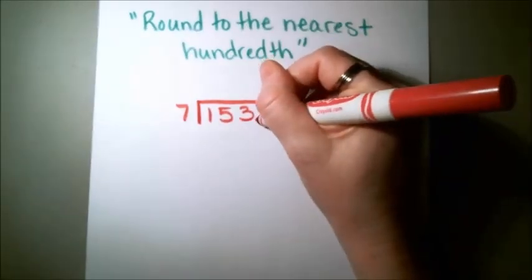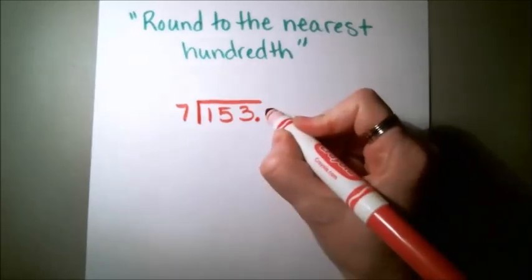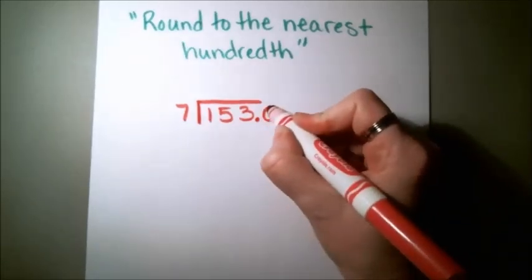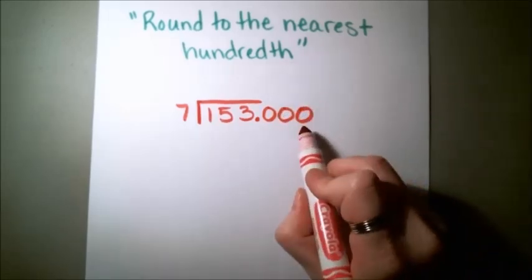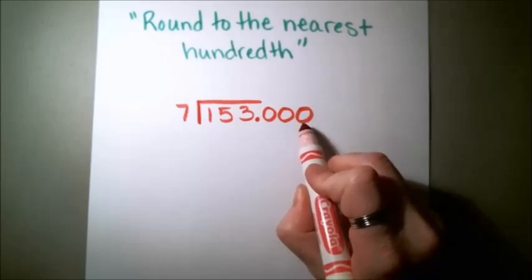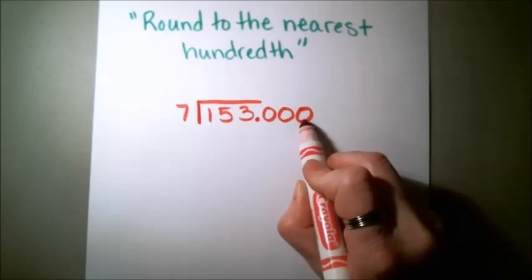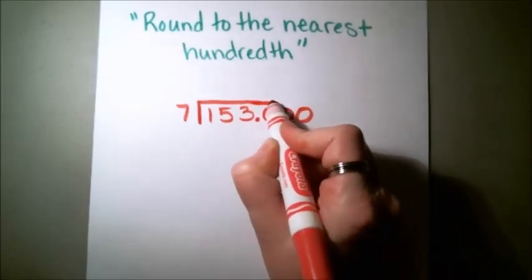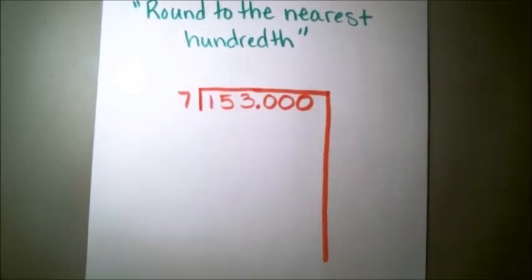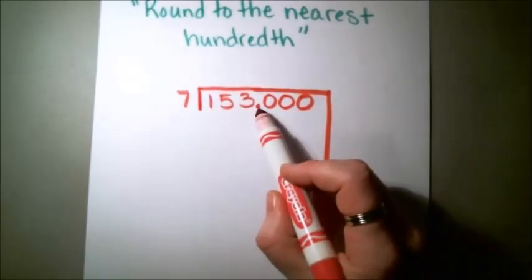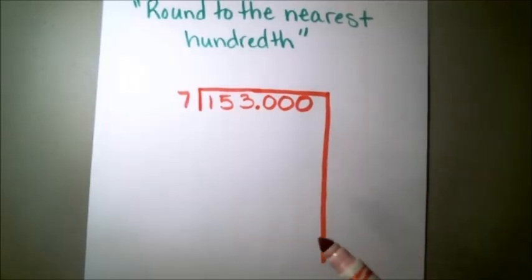So this is what that means: I need to add a decimal after my number underneath the bracket, and then I'm going to add 0's for those place values. So here's a tenth, hundredth, and I'm going to add one more 0 here for the thousandth place. I need that thousandth place so that I can round to the nearest hundredth place. So again, I'm just ignoring this decimal and treating this problem as 153,000 divided by 7.